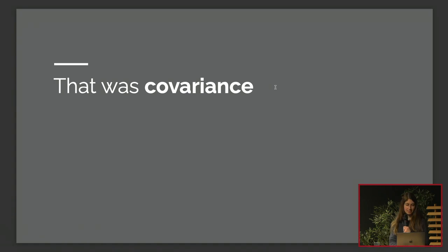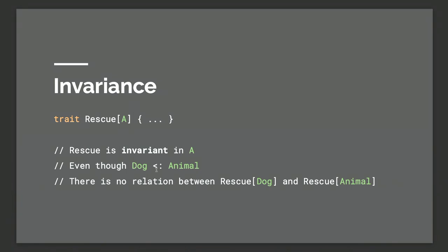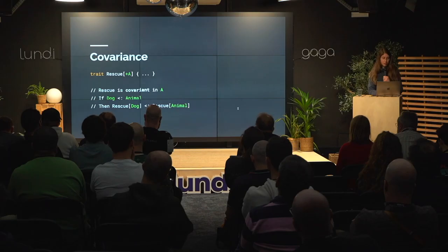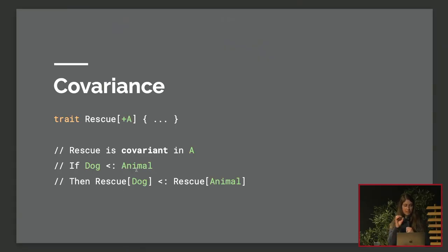Quick recap: invariance means no plus or minus before your type parameter, and even though Dog is a subtype of Animal, Rescue[Dog] and Rescue[Animal] have no relationship — you can never substitute one for the other. Covariance, designated by the plus sign, propagates that subtyping relationship in the same direction into your type class, so Rescue[Dog] becomes a subtype of Rescue[Animal].